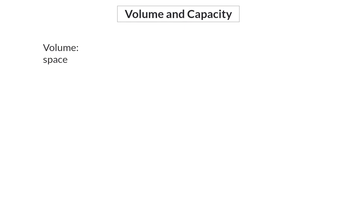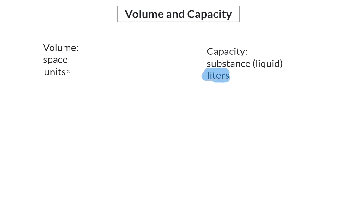Volume indicates the amount of space that a shape occupies, and it is measured in cubic units. Another way to measure this is called capacity, which describes the amount of substance that the shape can hold. This is measured in liters. We need to be able to convert between different liters, and we use the same prefixes as with meters, though we don't use centiliters often, so we'll ignore that one.